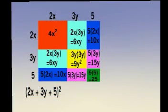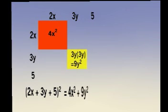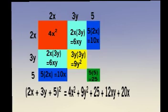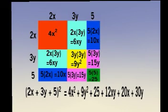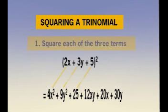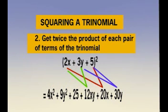This can be shown pictorially. Hence, if you want to square a trinomial, just: Number 1, square each of the 3 terms, then Number 2, get twice the product of each pair of terms of the trinomial.